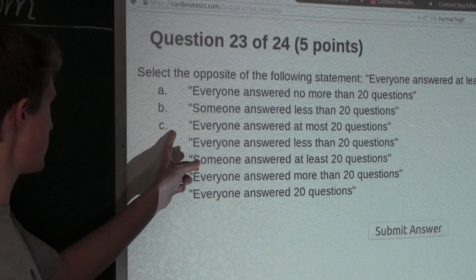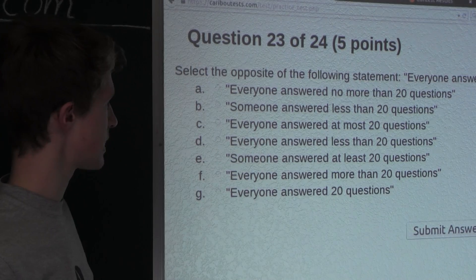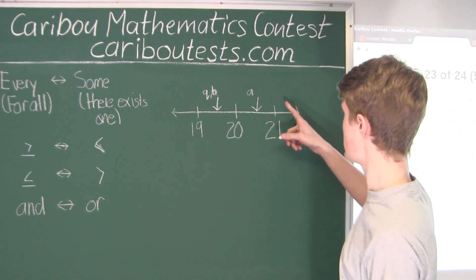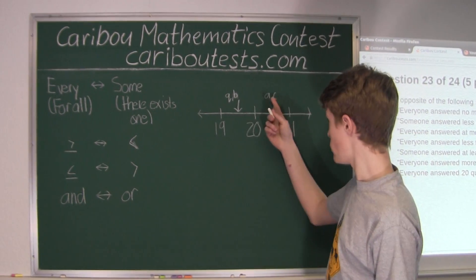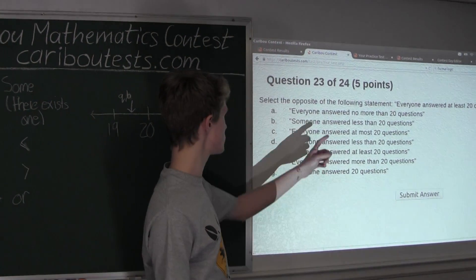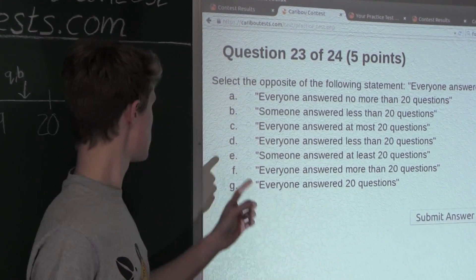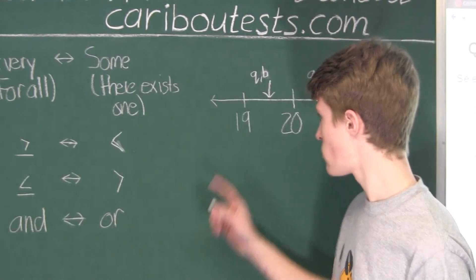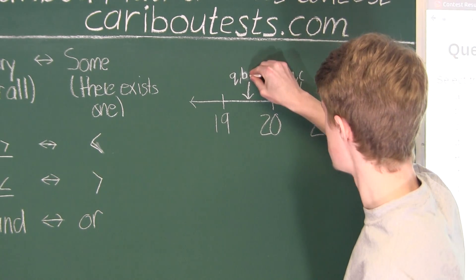Now option C: 'Everyone answered at most 20 questions.' At most means 20 or less, so the option distinguishes between 20 or less and 21 or more. We can see that C and A are both the exact same options, because 'no more than 20' and 'at most 20' mean the same thing. Now option D: 'Everyone answered less than 20 questions,' which means 19 or less questions, and also distinguishes between 20 or more — so that must be in this range.